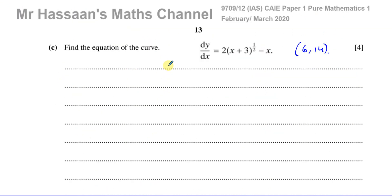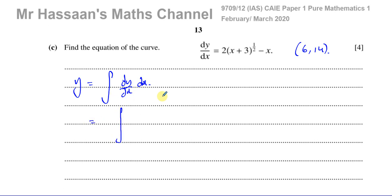Now part C: find the equation of the actual curve. We have dy/dx, the gradient function, and we need to find y. y equals the integral of dy/dx with respect to x. So we integrate 2(x + 3)^(1/2) minus x with respect to x.